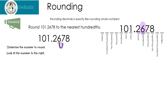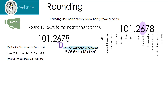The next thing I need to do is look at the number to the right, or look next door. If that number is five or larger, I'm going to round up the underlined number by one. If the number next door is four or smaller, I'm going to leave it alone. In this case, it is five or larger because we're looking at the seven. Seven is larger than five. That means we're going to round the underlined number up by one. The answer is 101 and 27 hundredths.